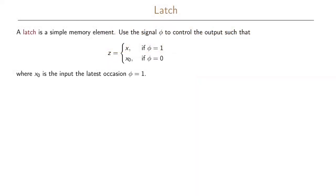We will now introduce a simple memory element called a latch. A latch uses a signal called phi to control the output such that the output z is the input x if phi equals one, and it is the previous input x-zero when phi is equal to zero. Previous input x-zero means the input we had the last time the control signal phi was a one.